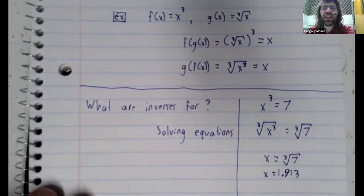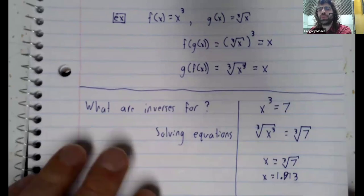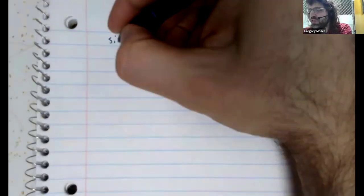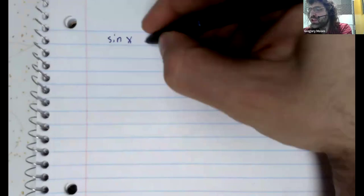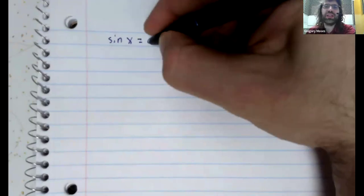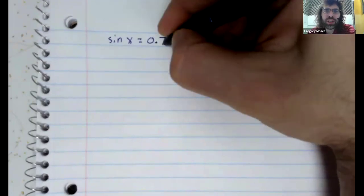So what's this have to do with trigonometry? Well, suppose we have an equation. The sine of x equals 0.7, for example.